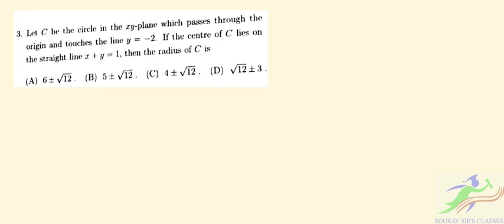Hello students, welcome to short classes. In this particular video we'll be solving question number 3 from the ISI admission test for the M.Tech program. It is given: let C be the circle in the XY plane which passes through the origin and touches the line y = -2. The center of C lies on the straight line x + y = 1.